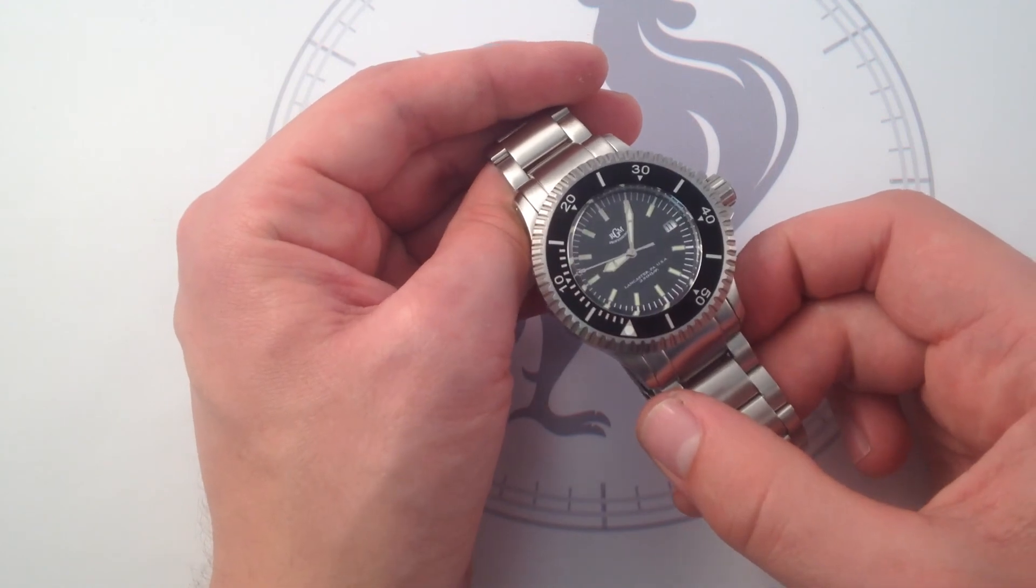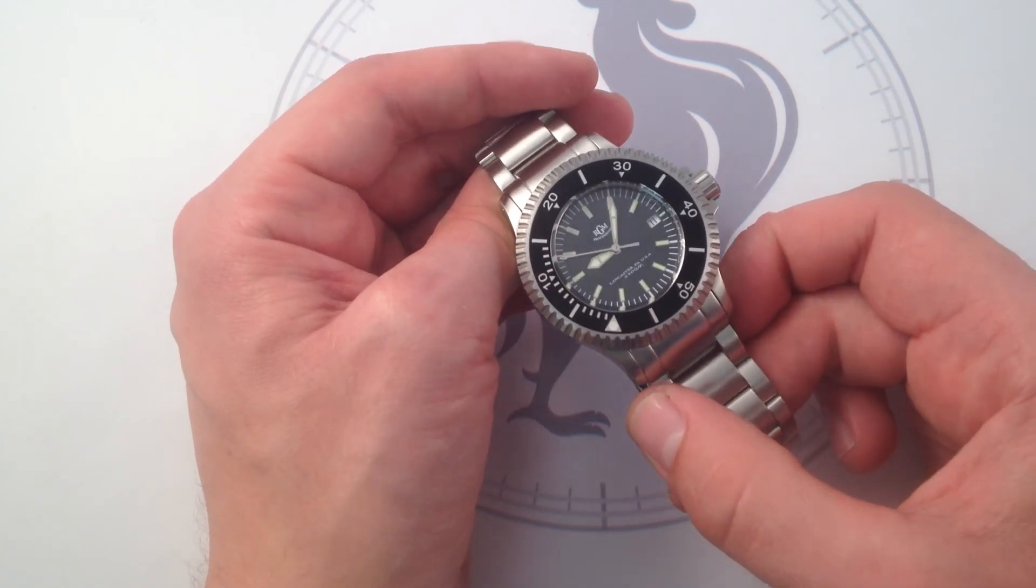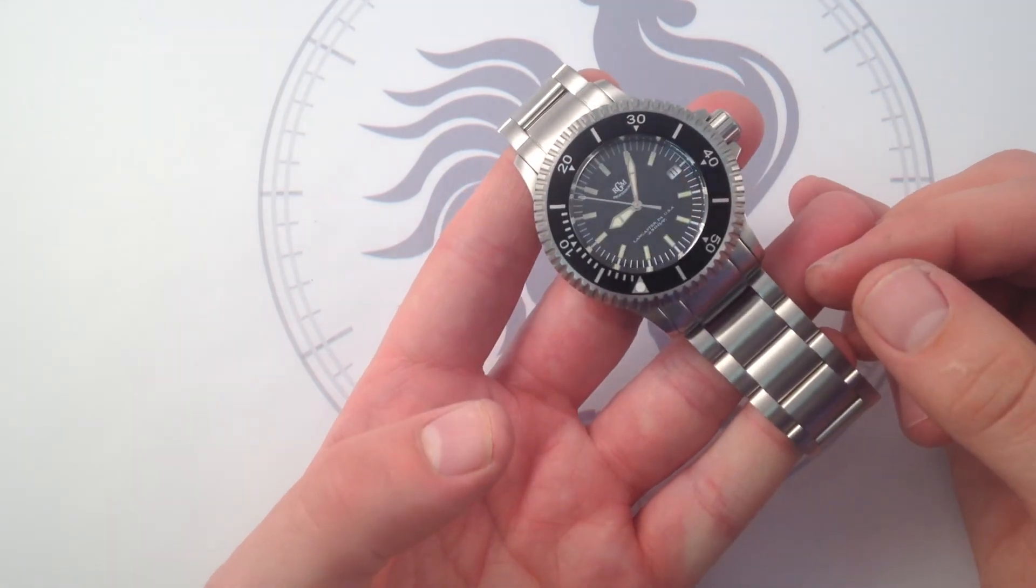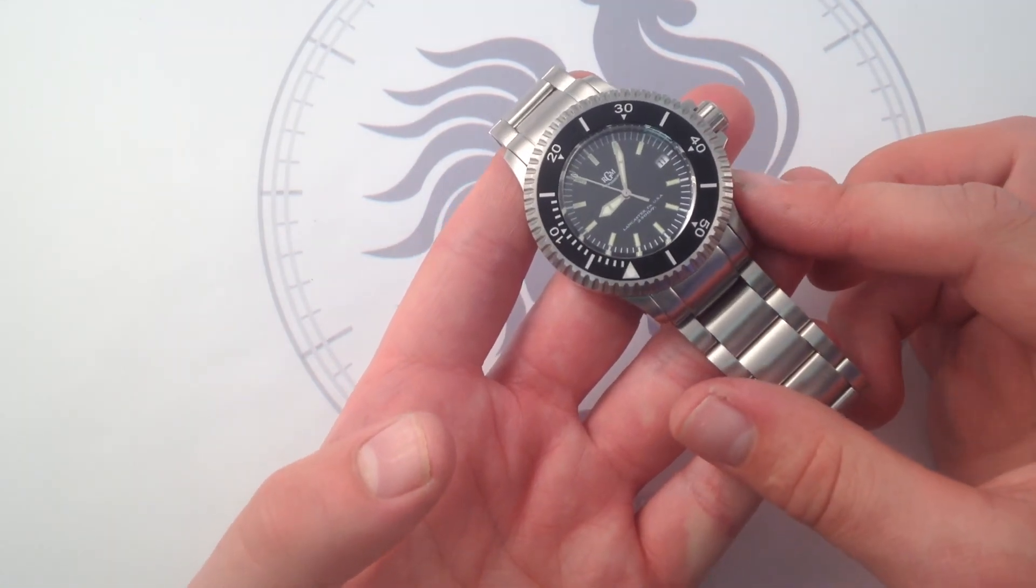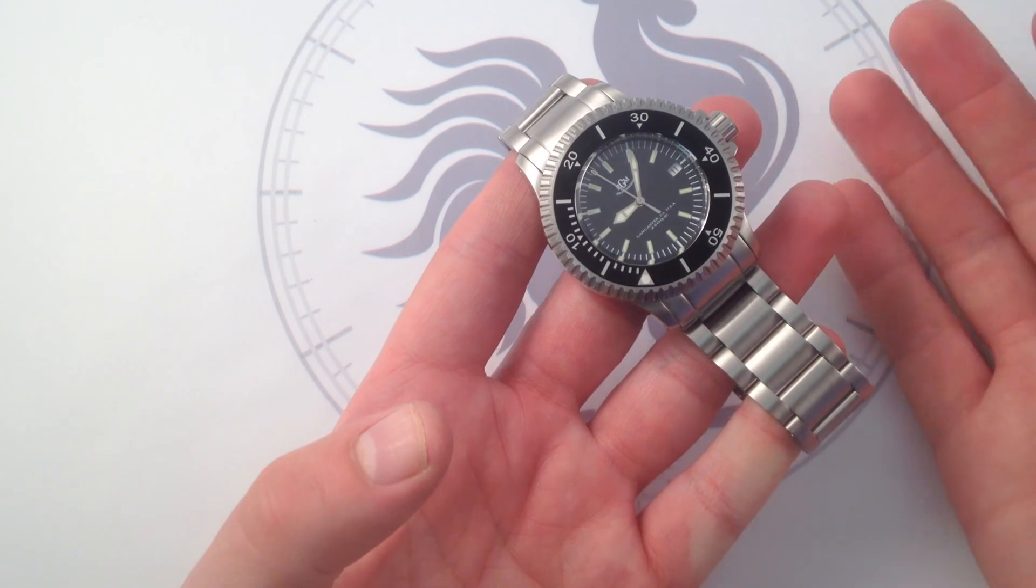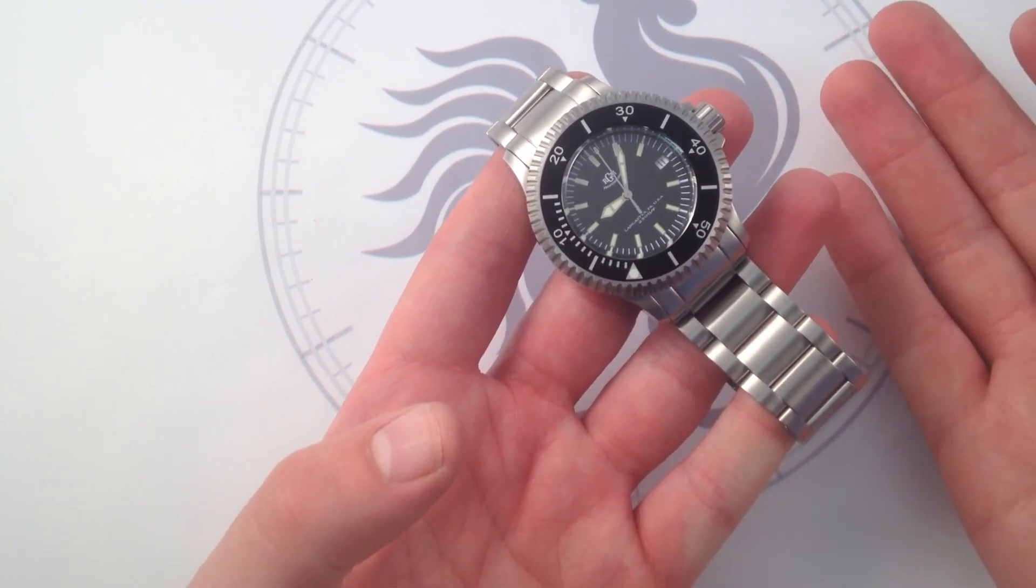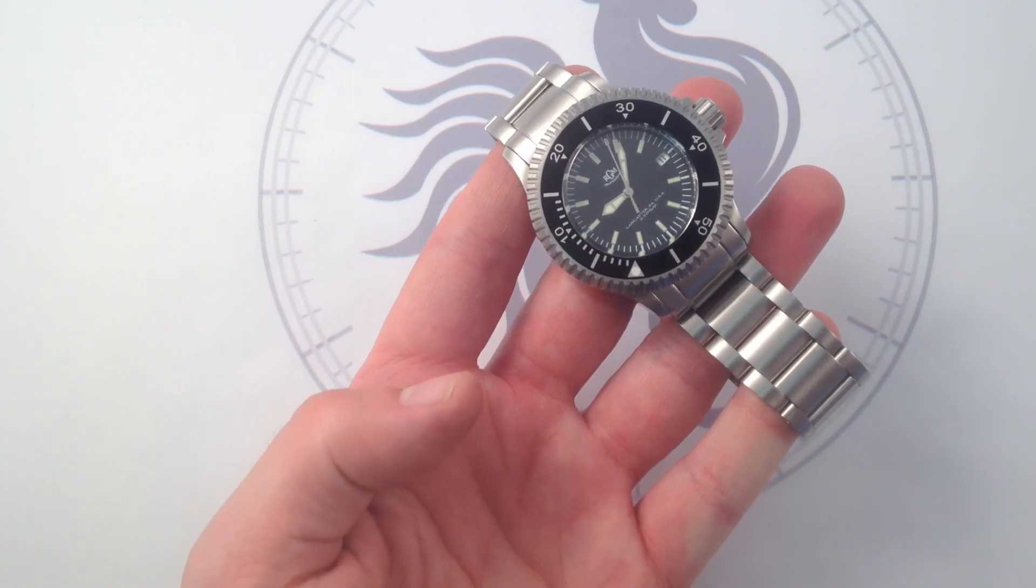This watch simply doesn't disappoint from a fit, finish, or philosophy perspective. And you can see the RGM Diver reference 300, 43.5mm in stainless steel, with all original RGM boxes, technical manuals, and documents of provenance on our website, Watch You Want.